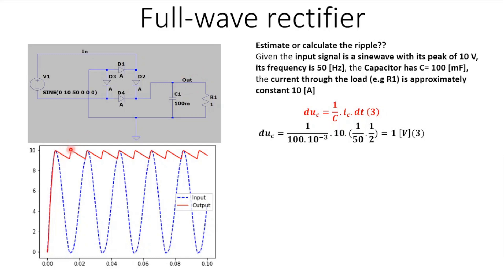When we look at the red signal we can see that there are two processes. The first process is a charging process and the second one is the discharging process. In the charging process, let's look at this period first. The current will go from the positive terminal of the AC voltage source through D2 and then through the capacitor.